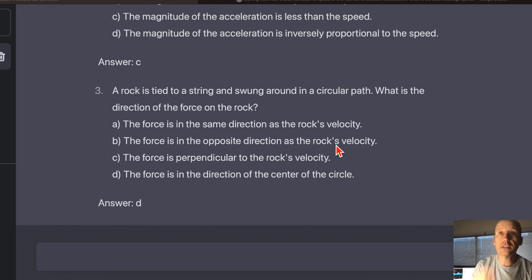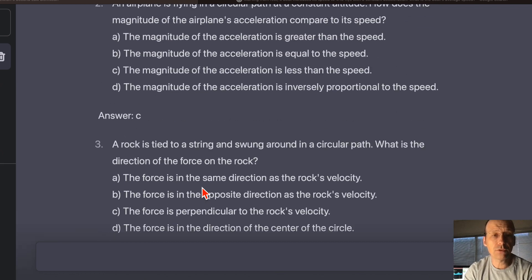It could be going around in a circle and slowing down. That's possible. The force is perpendicular to the rock's velocity. Yes. It has to at least have a perpendicular component because it's moving in a circle. See, that's... Okay, let's see. So that's what it said.